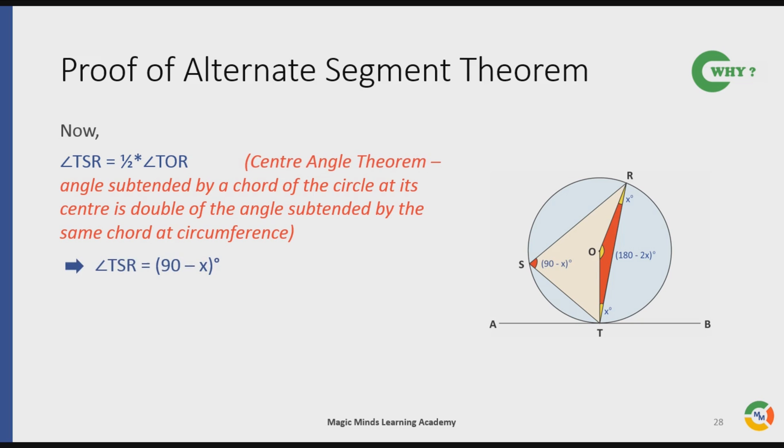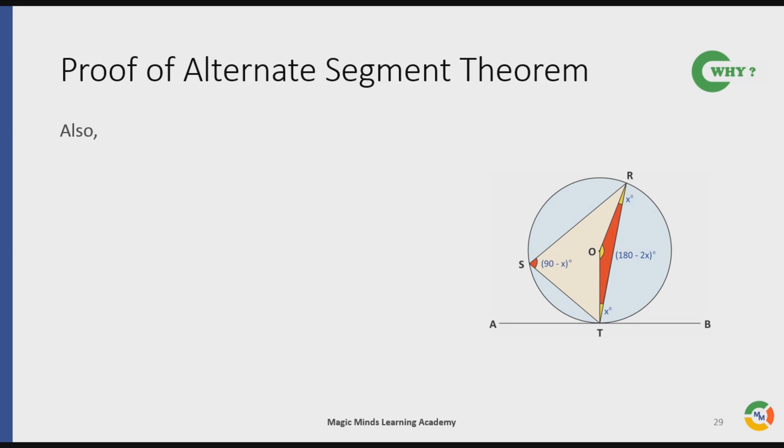Moving forward. As you know, angle OTB is equal to 90 degrees as tangent is perpendicular to radius. Notice that angle OTB is nothing but sum of angle OTR and angle BTR. This implies angle OTR plus angle BTR is equal to 90 degrees.